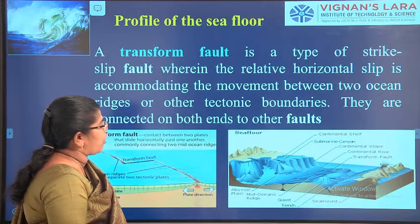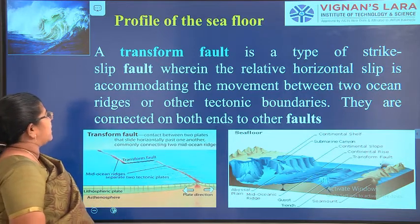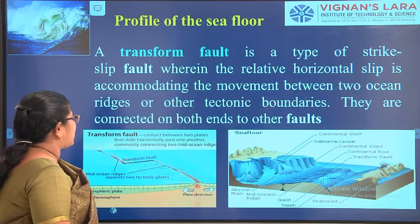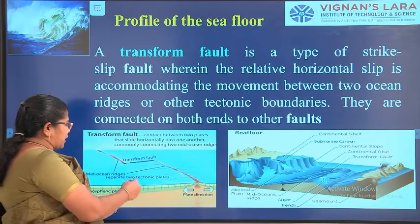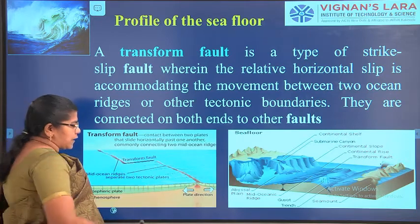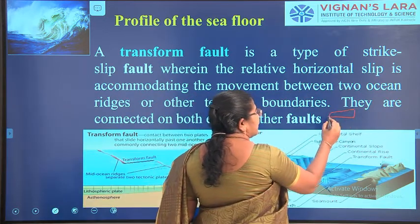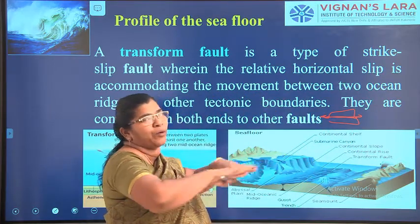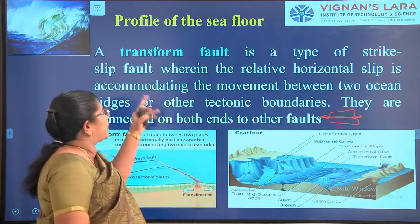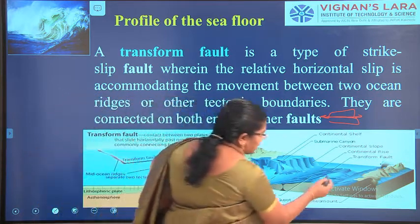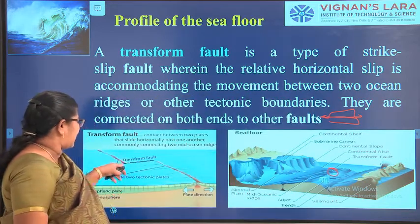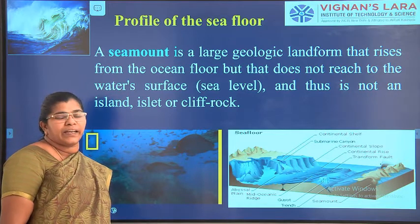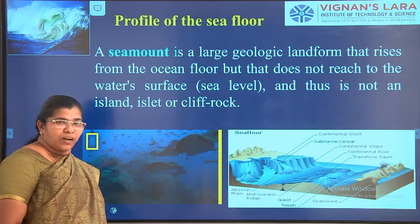The next feature is the transform fault. A transform fault is a strike-slip fault wherein the relative horizontal slip accommodates the movement between two ocean ridges or other tectonic boundaries, connected on both ends to other faults. There will be two plates — one plate tries to move in one direction and the other in the opposite direction, creating a shear movement between the plates, forming the transform fault. This area is mainly where earthquakes, volcanoes, and landslides are initiated.